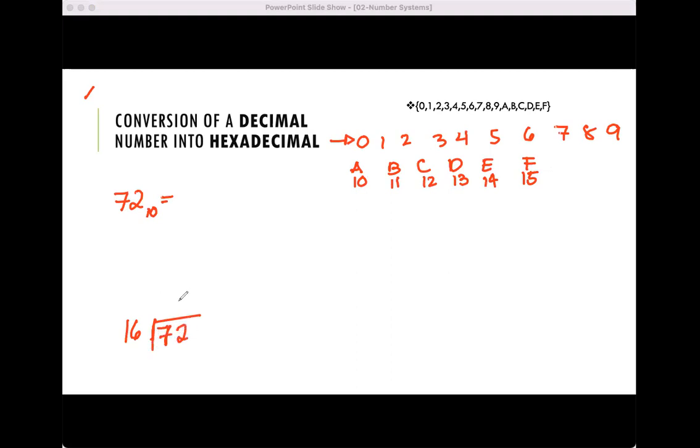72 divided by 16 is 4 with the remainder of 8, but I will stop here because I can no longer divide 4 by 16. So this is already the hexadecimal form: 48 base 16.